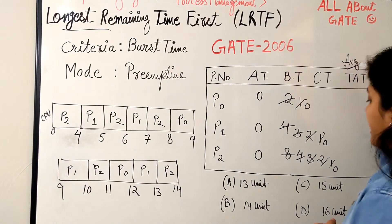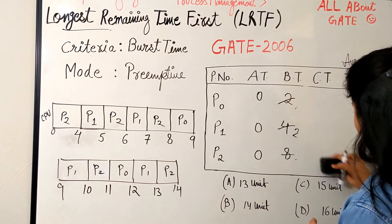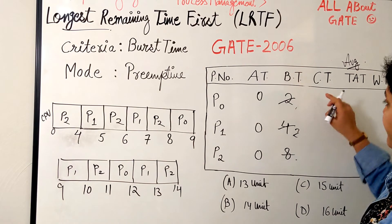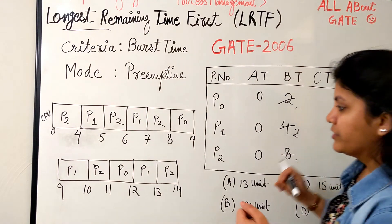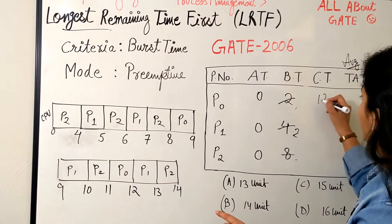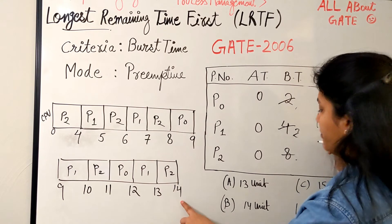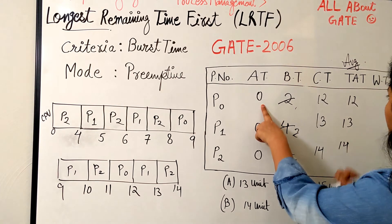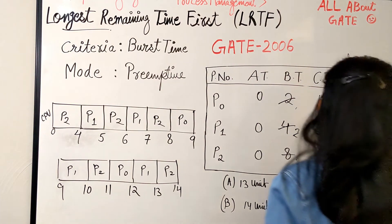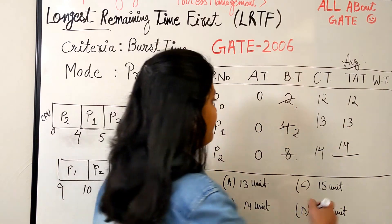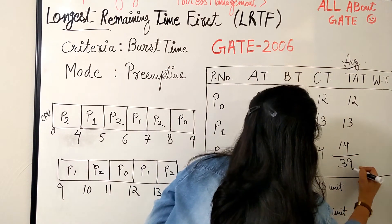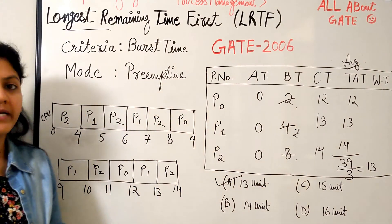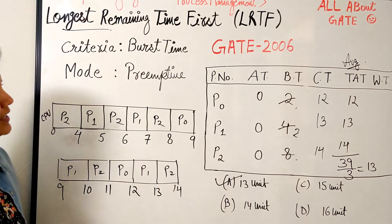Now quickly find out the completion time because we have to find the average turnaround time. The completion time for each process: because all processes are arriving at time 0, whatever is the completion time is the turnaround time. P0 is completing at time 12, P1 completing at 13, P2 completing at 14. So the turnaround times are 12, 13, and 14. What is the average turnaround time? Just take a sum: 12, 13 is 25, and 14 is 39, divide by 3. That is nothing but 13 bursts. So the answer is straightforward option A, 13 units.